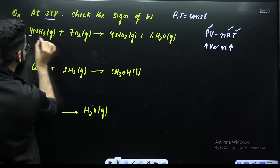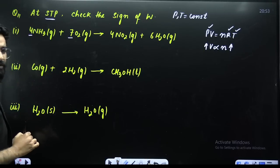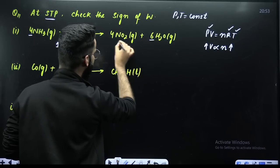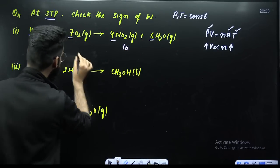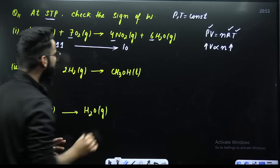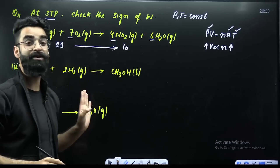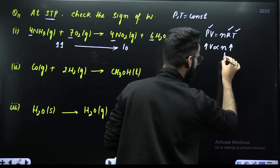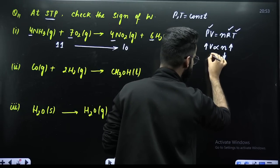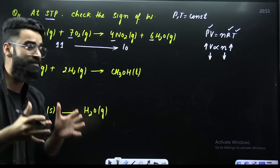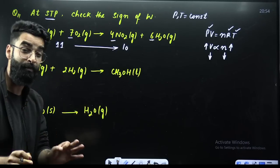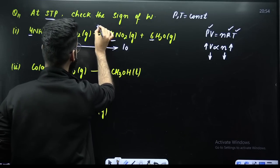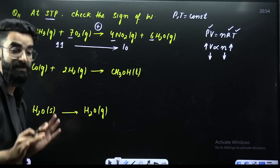On the reactant side, how many gaseous moles do we have? 7 plus 4, that is 11. On the product side, how many gaseous moles? 6 plus 4, that is 10. So when this process is happening, gaseous moles are decreasing — N is decreasing. If N is decreasing, volume should decrease. Decrease in the volume of the system is what you call compression. Whenever there is compression, work is done on the system, so W value is taken as positive. In the first case, the value of W is positive.